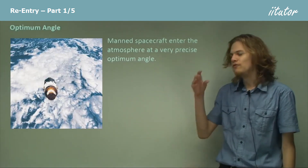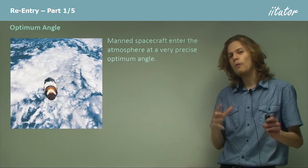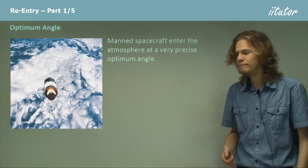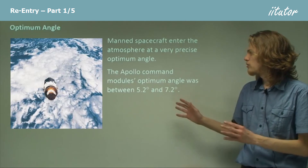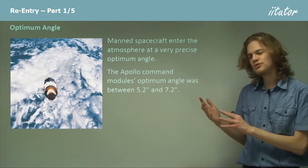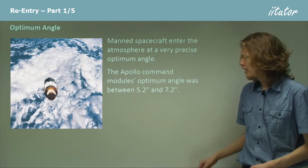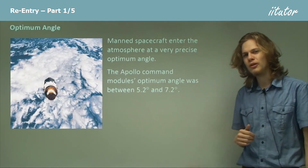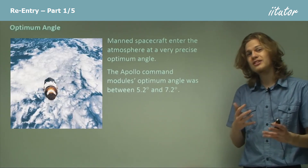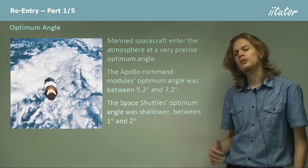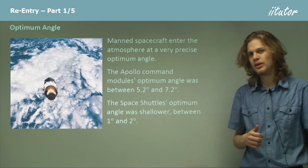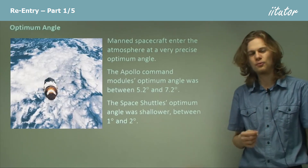Manned spacecraft must enter the atmosphere at a very precise optimum angle to prevent either of these two scenarios from happening. The Apollo command modules had an optimum angle of between about five degrees and seven degrees to the horizontal — pretty close to horizontal as we begin re-entry. For the Space Shuttle, it was even shallower, re-entering between about one and two degrees from the horizontal, and so it took a longer time to get through the atmosphere.